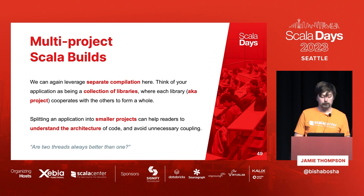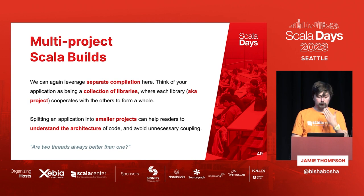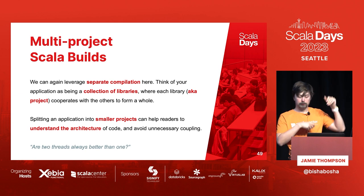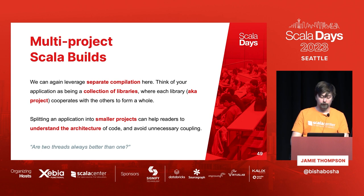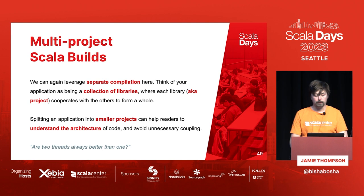Now I want to broaden the scope to multi-project builds, not just single-project builds. A multi-project build reuses the idea of separate compilation: instead of one big blob of files, your application is treated as a collection of libraries that depend on each other. You have A, B, C, and you use the class files from A to compile B, then class files from B to compile C, and so on. I'd advise splitting your application into smaller projects — not only because it helps you reason about the code structure and makes onboarding easier, but it can also increase compilation speed.